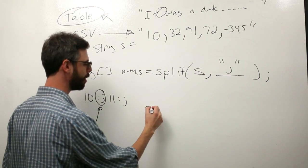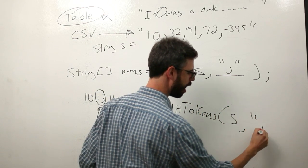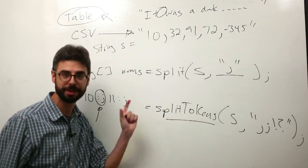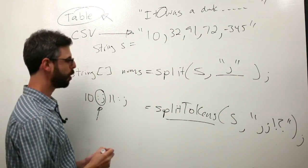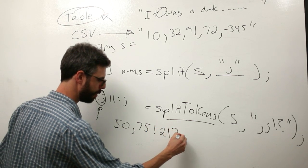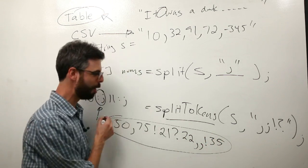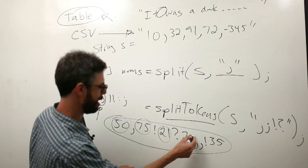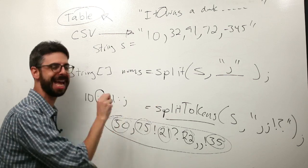If I were to say split tokens, comma, semicolon, exclamation point, question mark, with processing split tokens function, this means any one of these individual characters could be a delimiter. So this would now work. I don't know why I would have this, but if my string looked like this, with split tokens, I would get this is the first token, this is the second, this is the third, and this is the fourth, and this is the fifth. So these are two functions that will come up again and again and again in different examples.